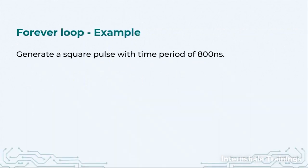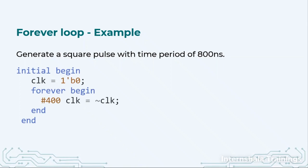So here what we are doing is generating a square pulse of infinite length with a time period of a given amount of time, let's say 800 nanoseconds. So in the initial block we define that clock is a 1-bit value and the value is given as 0. Now in the forever loop we begin and end, and in between we write: after a delay of 400 nanoseconds, clock becomes invert of clock, that means 0 will become 1.